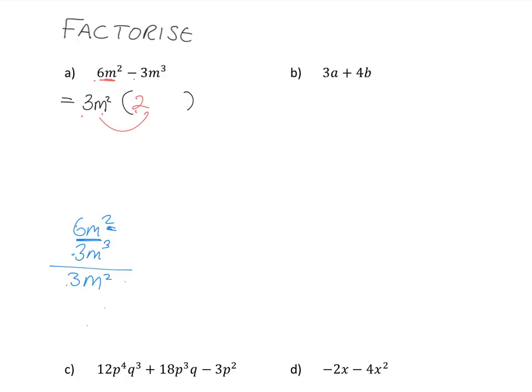Pay attention to the sign. This thing here is negative, so I must have a negative. And then the question here is 3m squared times what will get me to 3m cubed? Well, it's just going to be 3 times 1 and m squared times m to get to m cubed. So it's minus 1m. Let's just write that nicely now. 3m squared 2 minus m. And remember, you can always check your factorization by multiplying out. 3m squared times 2 is 6m squared. 3m squared times minus m gives me minus 3m cubed.